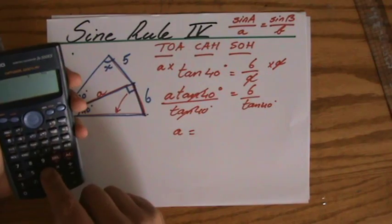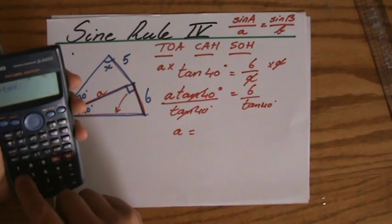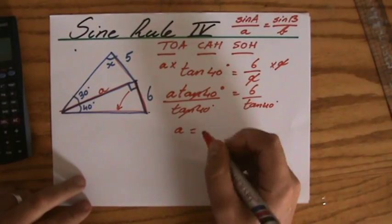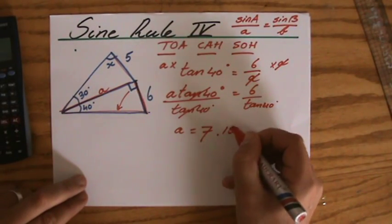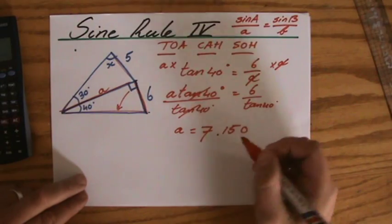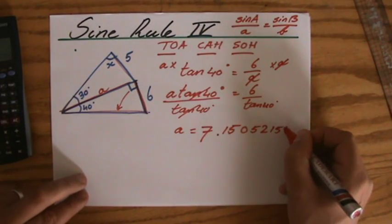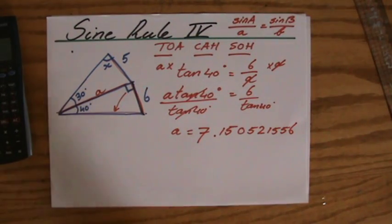Now let me put that in my calculator: 6 divided by the tangent of 40 degrees. And I want to write down as many decimals, because this is not my final answer yet. So please do not already start rounding this up or down. Let's not be lazy, let's write it down. That's A. Fantastic.